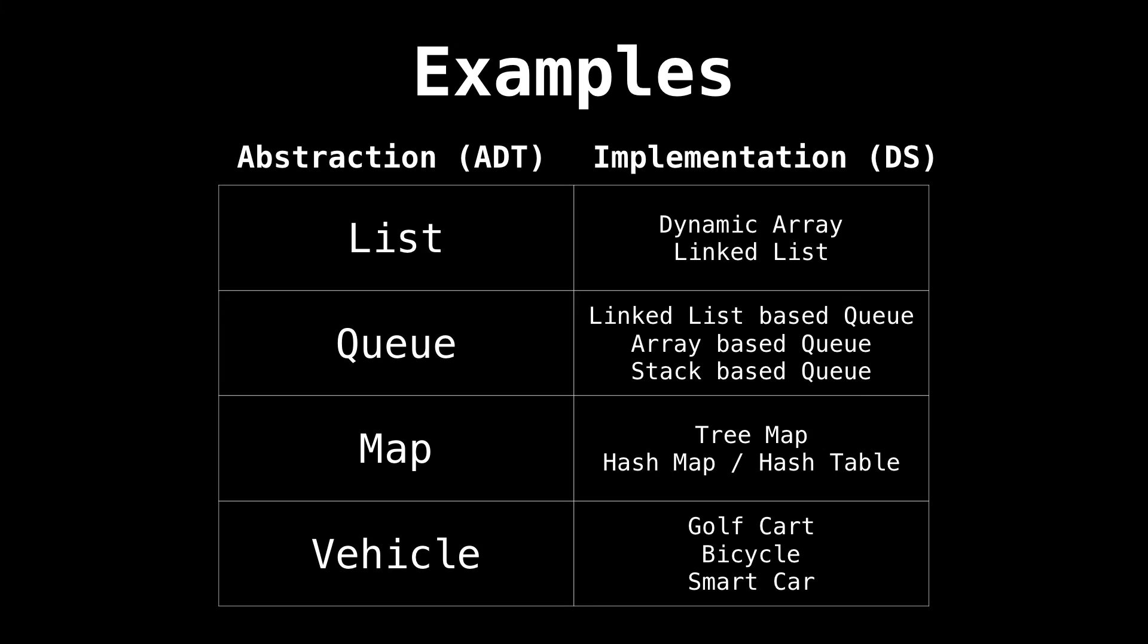Notice that under the implementation for a queue, I put a stack based queue because yes, you can have a queue which is implemented using only stacks. This may not be the most efficient way of implementing a queue, but it does work and it is possible. The point here is that the abstract data type only defines how a data structure should behave and what methods it should have, but not the details surrounding how those methods are implemented.